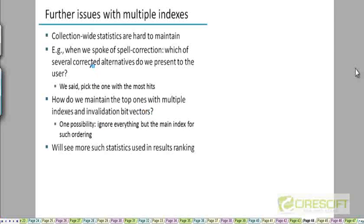How do you compute the various spelling alternatives? And then how do you use the collection frequency to decide which of the spelling alternatives is the most important one? When those statistics are harder to maintain for multiple indexes, this problem also becomes harder.